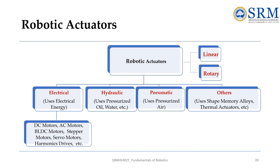Basic robotic actuators are classified as linear or rotary. Different types include electrical actuators, hydraulic actuators, pneumatic actuators, and other types such as shape memory alloys and thermal actuators.